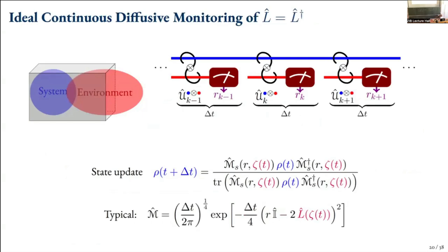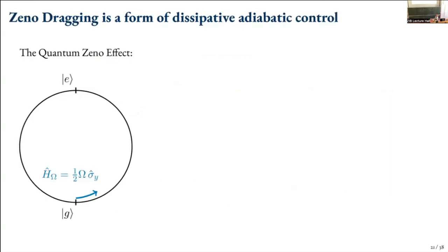We're looking at a system and environment with state updates in terms of Kraus operators, now doing things in continuous time rather than measuring individual photons. We have a short-time expansion for our measurement operators, with measurement operator parameter zeta(t) which is time-dependent. What we're going to do is change our measurement axis as a function of time. So let's think about the quantum Zeno effect.